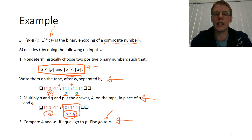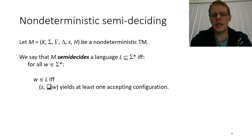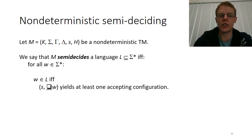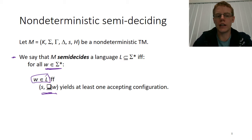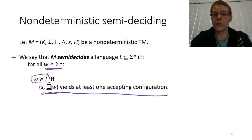Our definition for non-deterministic semi-deciding is just like deterministic semi-deciding: we drop the requirement to halt in every case and simply require that it halts and accepts if the string is in the language. More formally, a machine semi-decides a language if, for every possible input string: if the string is in the language, the machine yields at least one accepting configuration; and if the string is not in the language, the machine yields no accepting configurations — but it may loop forever on some paths.